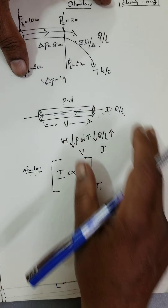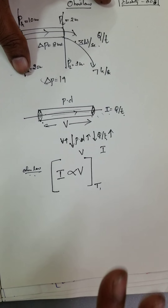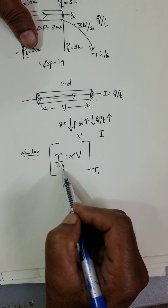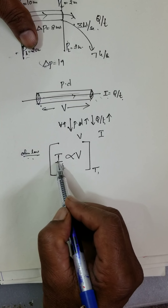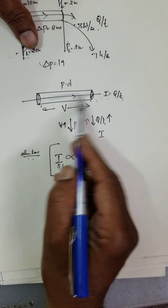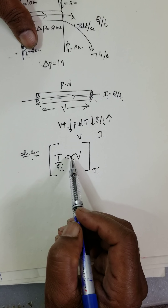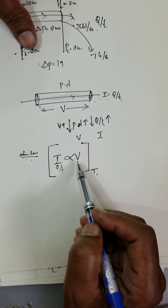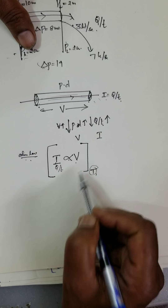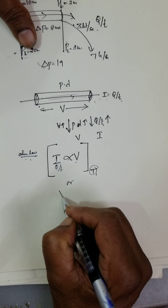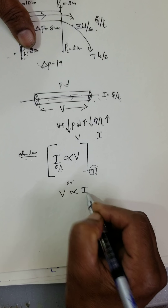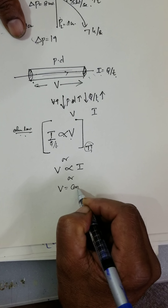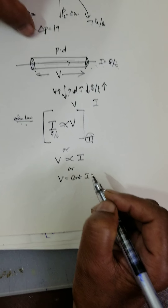Whether temperature, pressure, everything remains constant — the simple statement is: a steady current flowing through a given conductor is directly proportional to the potential difference between the ends of the conductor. At constant temperature, V is directly proportional to I, or V is equal to some constant R into I.